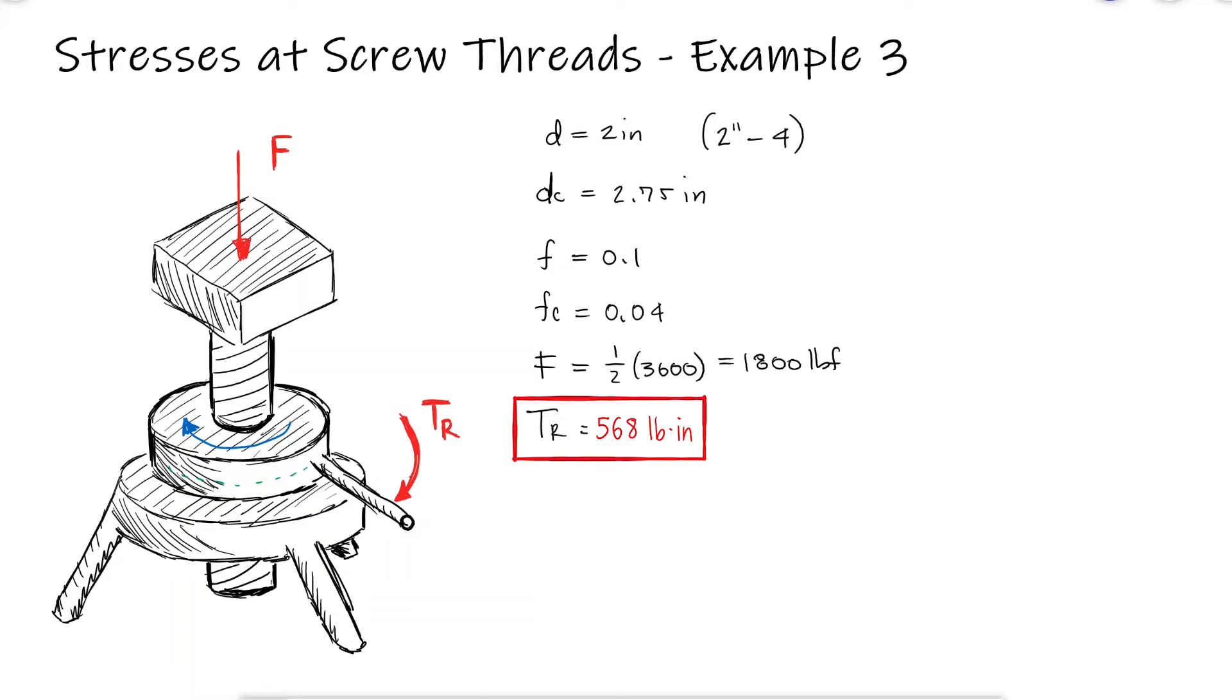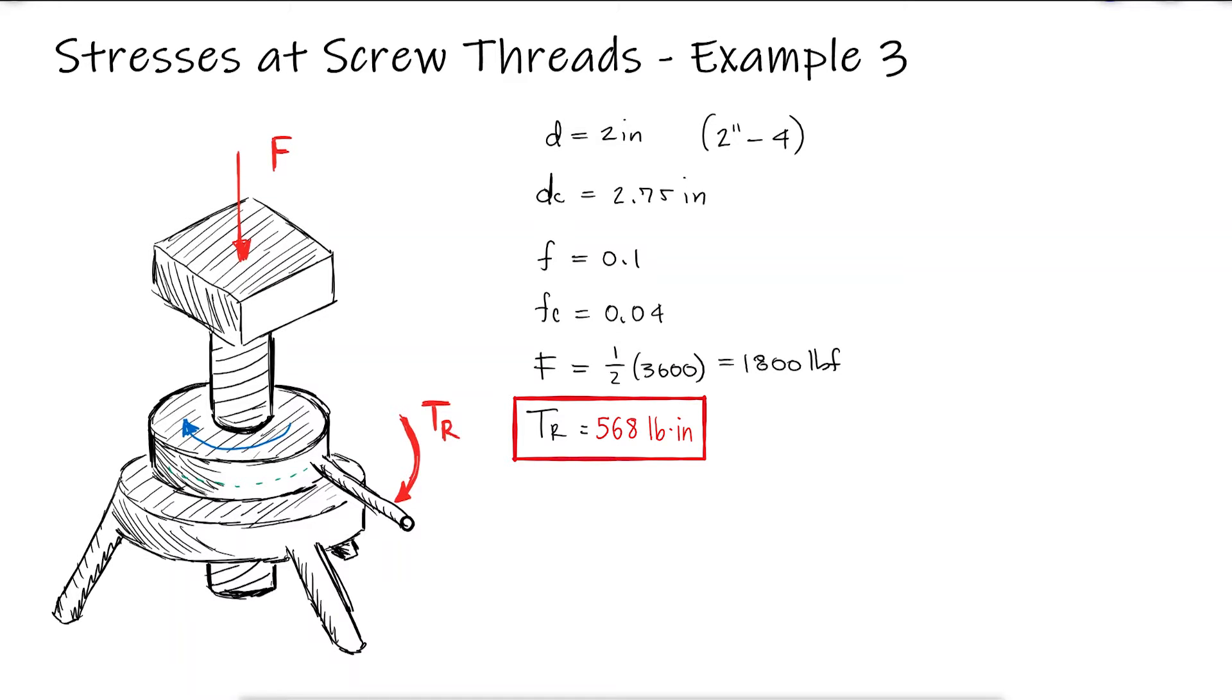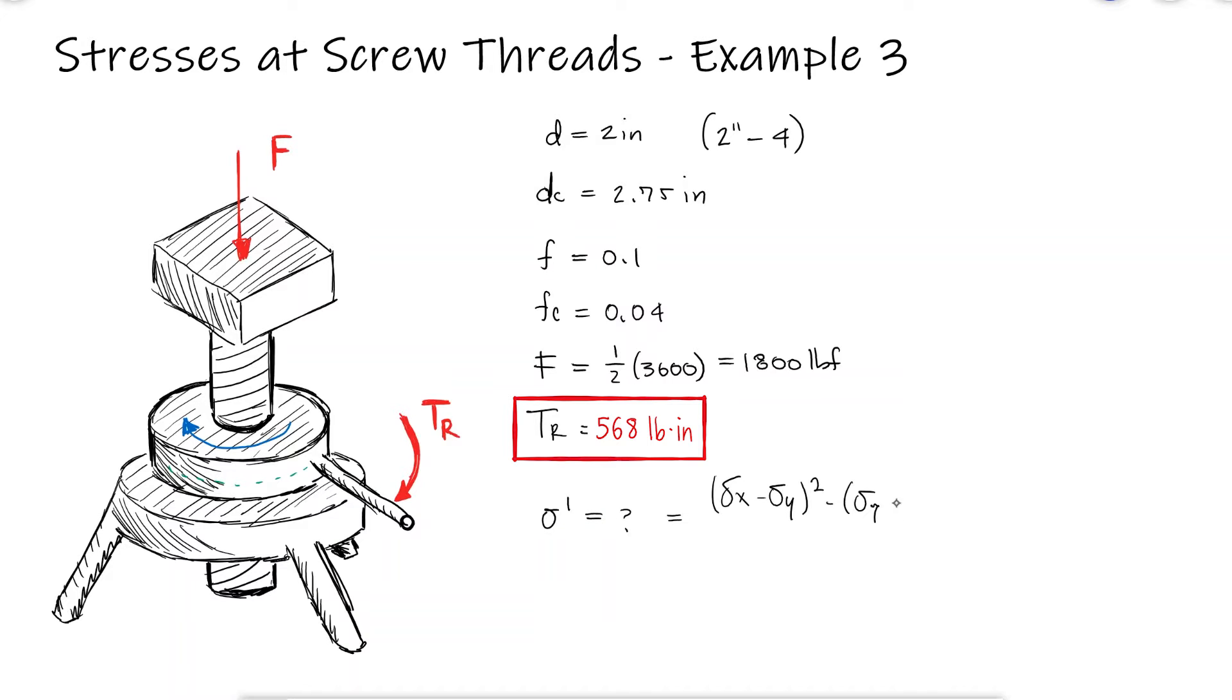For the jack that we used in example 3 of the power screws main video, links below, what is the von Mises stress at the critical location of the threads of the screw?